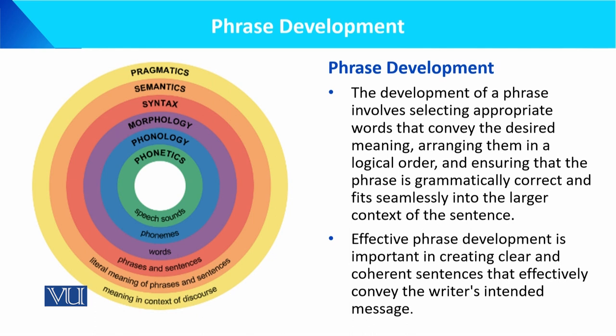اگر ہم یہ دیکھیں کہ phonetics کیا ہے — یہ speech sounds ہے؛ phonology کیا ہے — یہ words ہیں؛ اور morphology کیا ہے — یہ phrases and sentences ہیں؛ پھر syntax کیا ہے — literal meaning of phrases and sentences؛ اور پھر semantics؛ اور اس کے بعد pragmatics — جو meaning in a context of discourse ہے — یعنی ایک language in use۔ Pragmatics آپ کو situation بھی بتاتی ہے اور context بھی بتاتی ہے۔